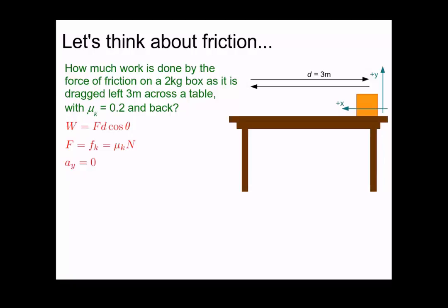The box is not moving in the vertical direction, which I've called y in this example, so we know that the acceleration in the y direction is equal to 0. By Newton's second law, the net force in the y direction is equal to 0. Thus, we can conclude that the normal force in this problem is equal to the weight of the box, mg. So the force of kinetic friction is mu_k times mg.